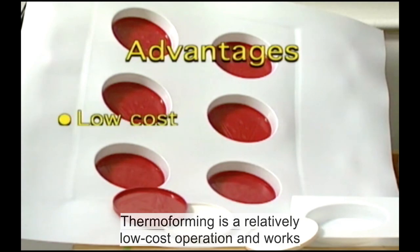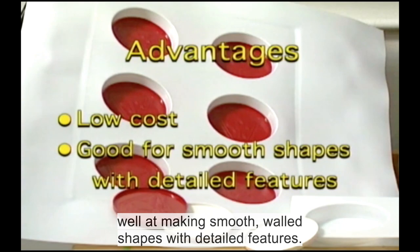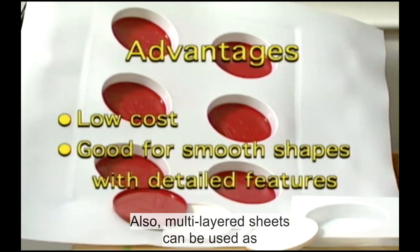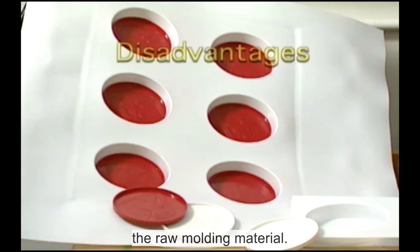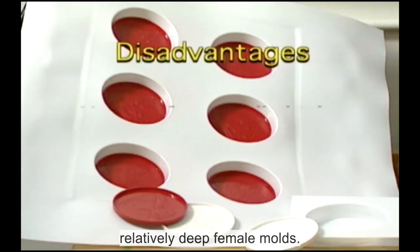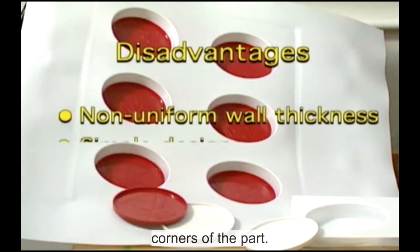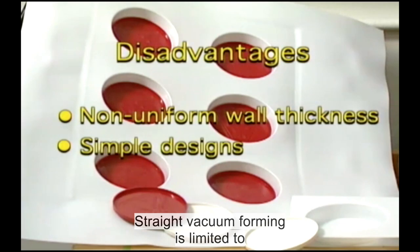Thermoforming is a relatively low cost operation and works well at making smooth walled shapes with detailed features. Also multi-layered sheets can be used as the raw molding material. A disadvantage occurs when using relatively deep female molds. The plastic thins at the upper edge and in the corners of the part.